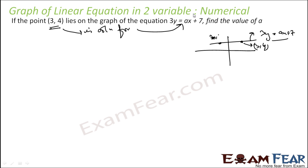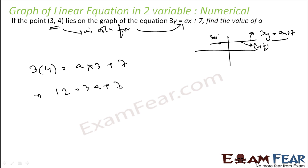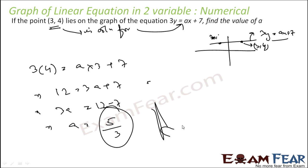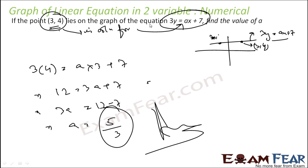So let us put the value of (3, 4) in this equation: 3 into 4 is equal to a into 3 plus 7. Solving: 12 equals 3a plus 7, so 3a equals 12 minus 7, so a equals 5 by 3. That is the answer. Pretty easy. If a point lies on the graph of an equation, that means the point is the solution for that equation.